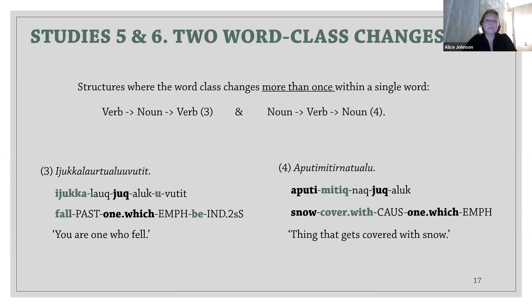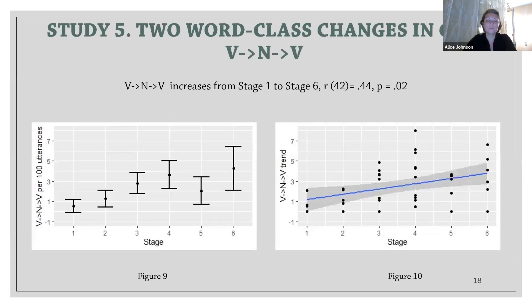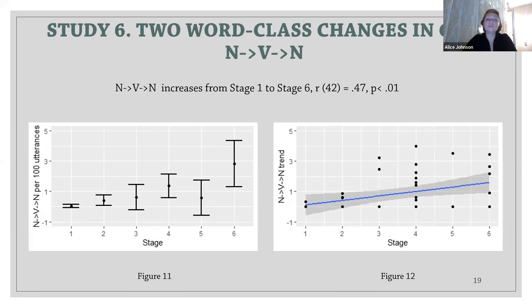In studies five and six, we examined more complex polysynthetic structures — those where the word class changes more than once within a single word. Example three shows how a verb can change to a noun with the help of a nominalizer and then back to a verb with a verbalizer. Example four demonstrates how a noun changes into a verb and back to a noun using a verbalizer and a nominalizer. Figures nine and ten show a positive correlation between the use of verb-to-noun-to-verb structures and the stages of linguistic development, while figures eleven and twelve demonstrate a positive correlation between the stages and the noun-to-verb-to-noun structures.